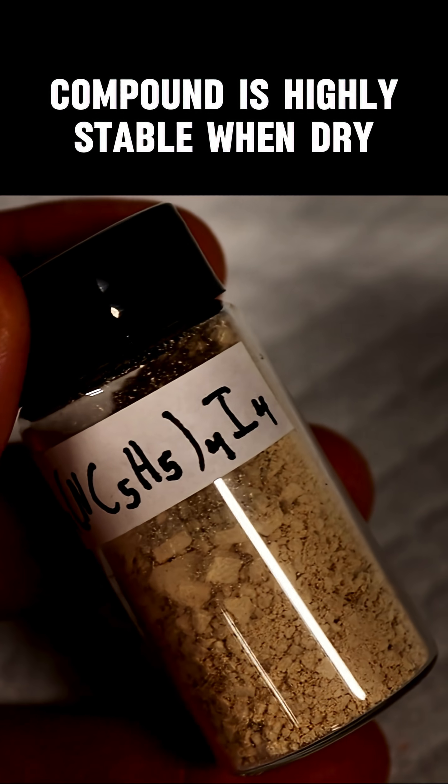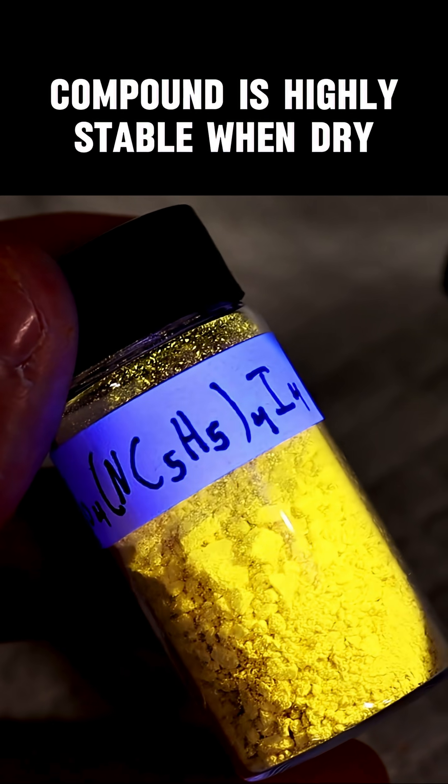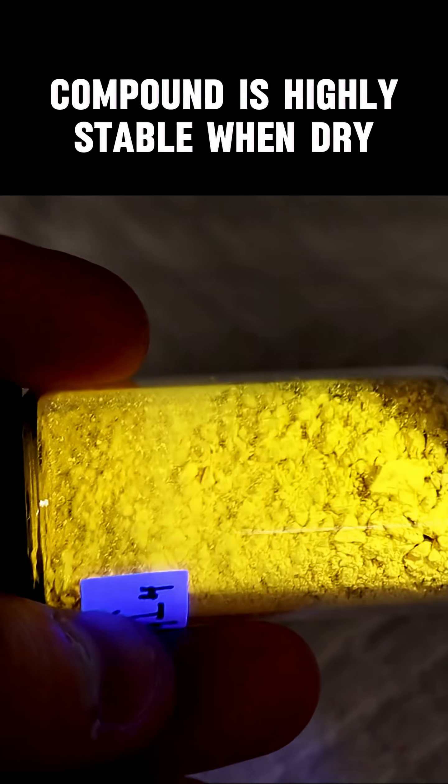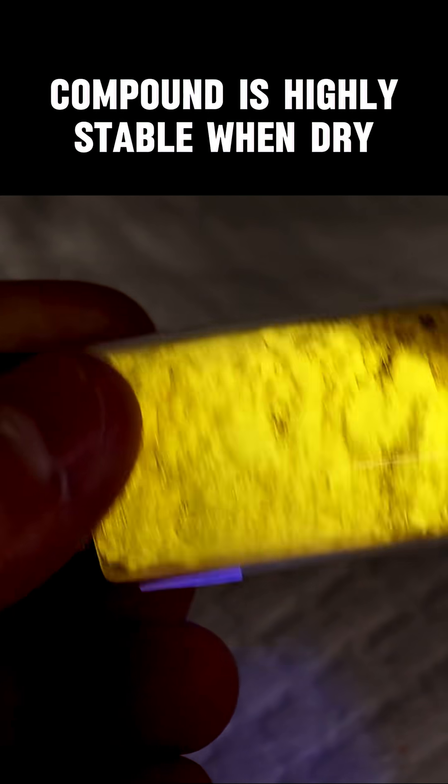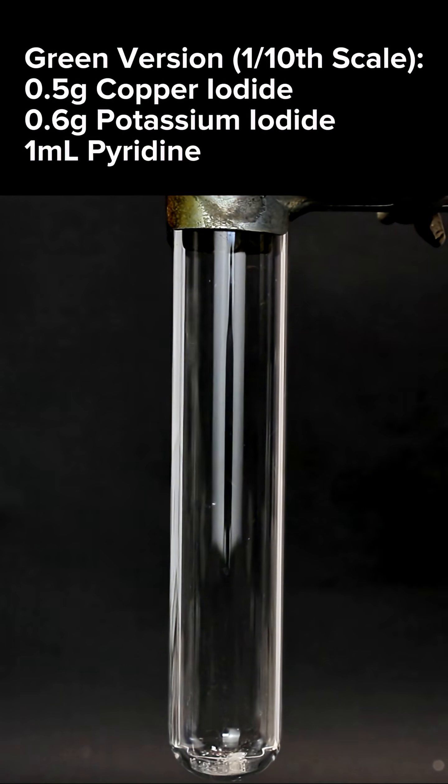You can also make a green variant of this compound that isn't nearly as stable but also looks really cool. It can be made basically the same way as the yellow variant, except this time I'm doing it in a test tube at about one-tenth the scale.